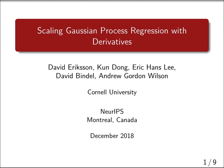This is a short presentation on scaling Gaussian process regression with derivatives, a paper appearing in NeurIPS 2018. My name is David Erickson, a PhD student in applied math at Cornell University, and this is joint work with Kun Dong, Eric Hans-Lee, David Bindell, and Andrew Wilson.